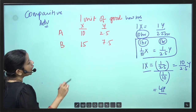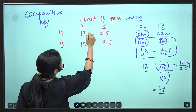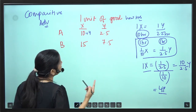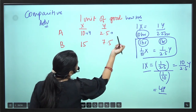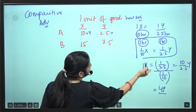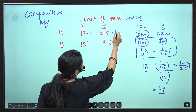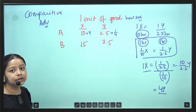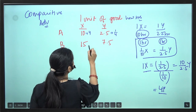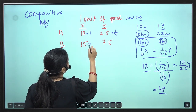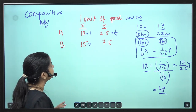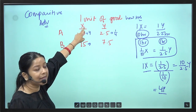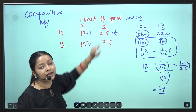So 1X equals 4Y. The opportunity cost of X is 4 — meaning to produce 1X you have to forgo 4Y. And so the opportunity cost of 1Y is 1/4, which is 0.25. Now for Country B: 15 hours are needed to make 1X, and 7.5 hours are needed to make 1Y.